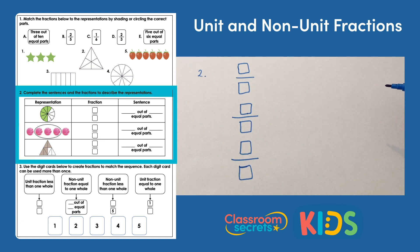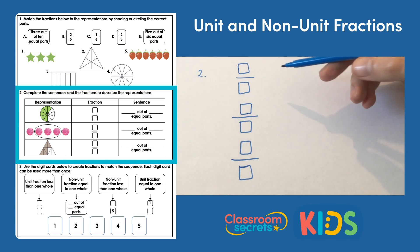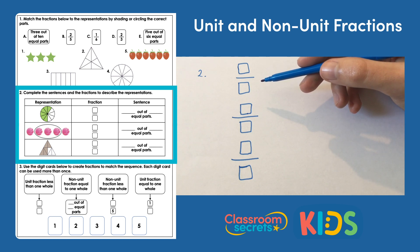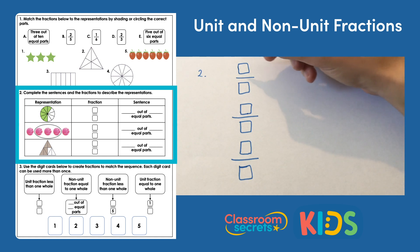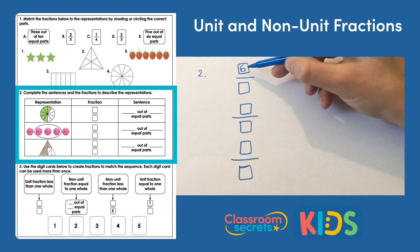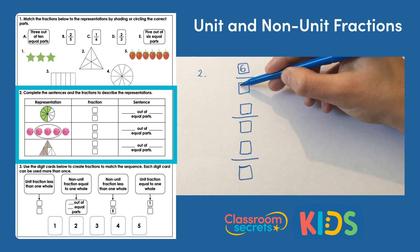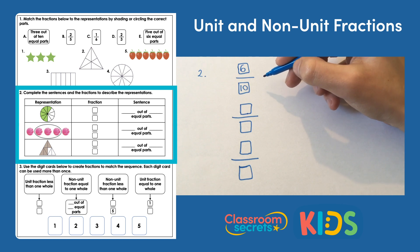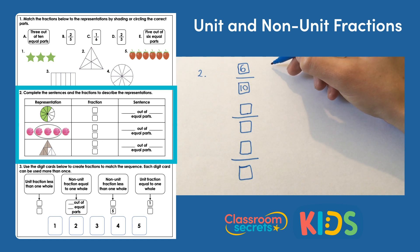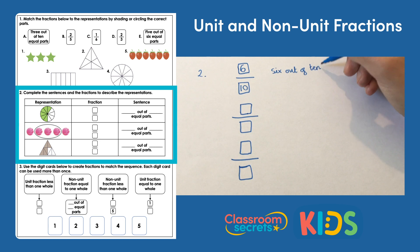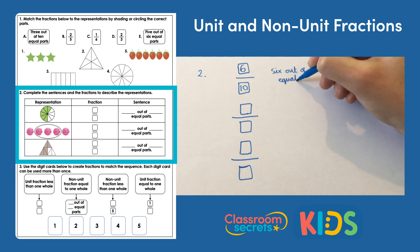Number two wants us to complete the sentences and the fractions to describe the representations. The first representation is a circle with some green parts shaded in. If you count those up, you've got six parts which have been shaded. So six will be your numerator — the top number in the fraction. There are ten parts altogether, so we're looking at six tenths as the fraction, written as six out of ten equal parts.